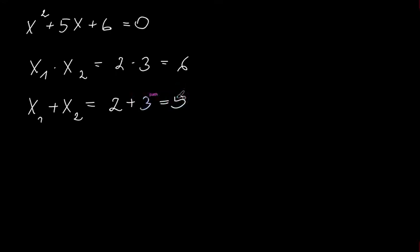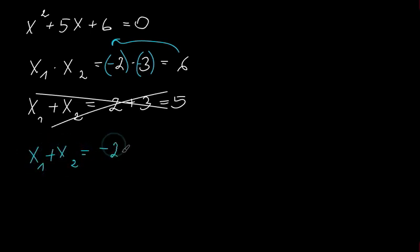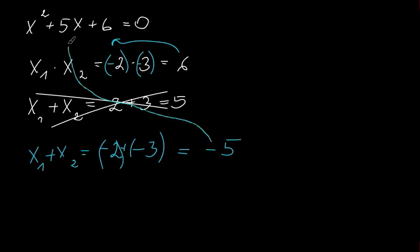But that's not what we need — we need negative 5. What if we multiply negative 2 times negative 3? That also gives us 6. Now if we add negative 2 and negative 3, this gives us negative 5, and that is exactly what we need. So our solutions are x₁ = negative 2 and x₂ = negative 3.